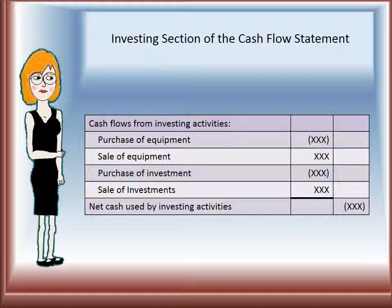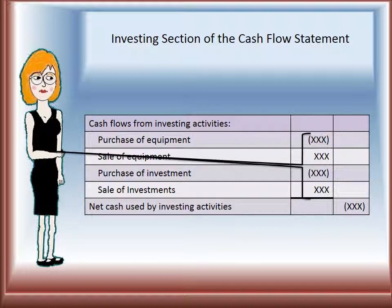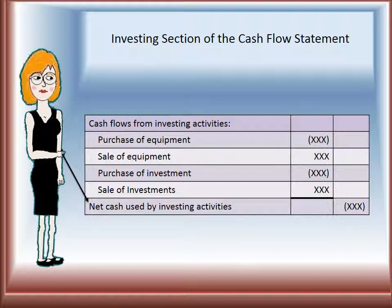Now we will start with the investing section of the cash flow statement. We will start with the header: cash flows from investing activities. We would subtract purchase of equipment because we are paying money, and add sales of equipment because that would bring money into the company. We would subtract purchase of investments and add back sales of investments. We would then total these — subtracting the negatives and adding the positives — to get net cash used by investing activities, which would be a negative amount. If it was a positive amount, we would say net cash provided by investing activities.